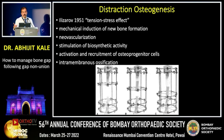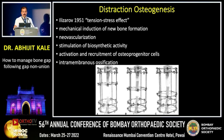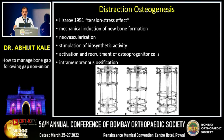The disadvantage of limb shortening is that it may cause some degree of limb length discrepancy and may also be a cosmetic concern. Coming to the standard treatment of gap non-union — distraction osteogenesis — this principle was laid down at Kurgan by none other than Ilizarov, who used mechanical induction for new bone formation. New vessels form, stimulating biosynthetic activity.